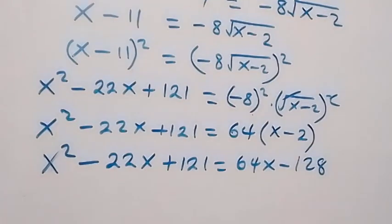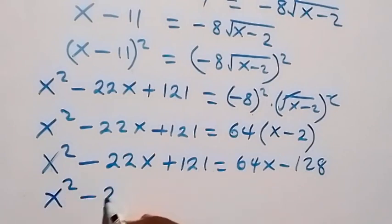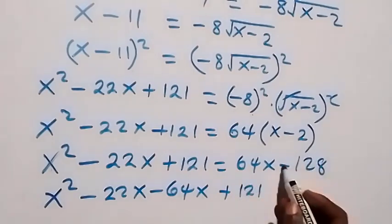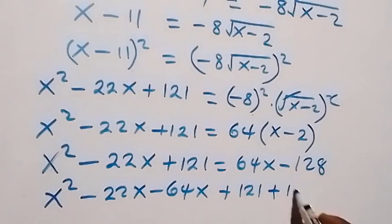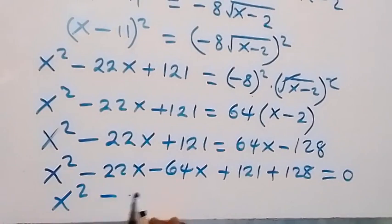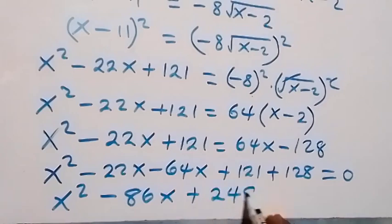Expanding the right side: 64x minus 128. Let's bring everything to one side to form a quadratic equation. This gives us: x squared minus 22x minus 64x plus 121 plus 128 equals 0, which simplifies to x squared minus 86x plus 249 equals 0.